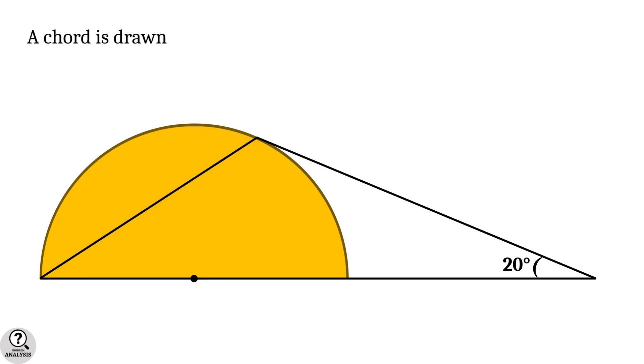A chord is drawn from the left end of the diameter to form a triangle. Then my problem is, what is this red marked angle?